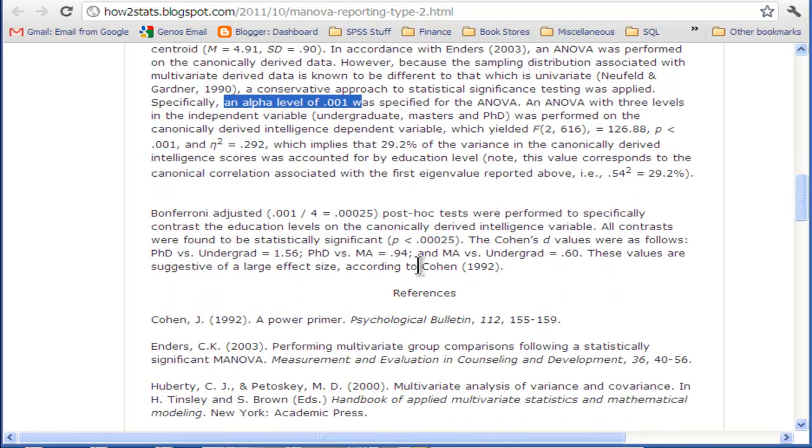I finish with some Bonferroni-adjusted post-hoc tests because I don't believe the ANOVA protects you for anything. This was looking at the differences between the means on the super variable between PhD and Master's, and I've got the Cohen's D values.